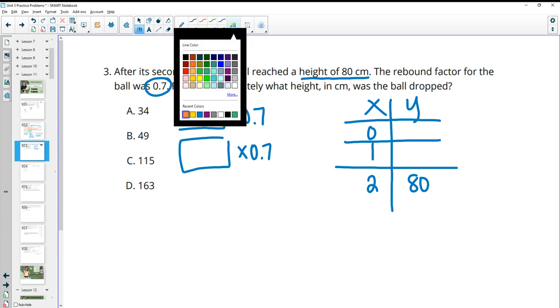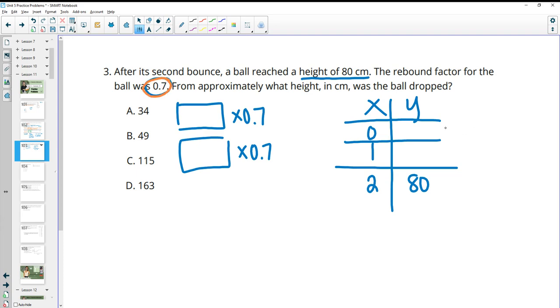Another way to do it is by thinking about this growth factor, right? So we're multiplying this by 0.7. We're multiplying this by 0.7 to get to that 80. So what's the backwards of multiplying by 0.7? So if we wanted to go backwards, how do you undo multiplying by 0.7 would be dividing by 0.7. And then we could divide by 0.7 again to come up with the answer on our own. So if we do 80 divided by 0.7, we get about 114. And then when we do 114 divided by 0.7, we get about 163. And that gets us to answer D.